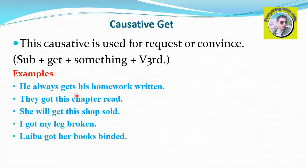Another example: 'We got this chapter read.' And number three: 'She will get this shop sold.' These are examples of the 'get' causative in the passive voice.